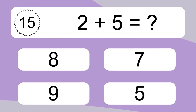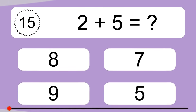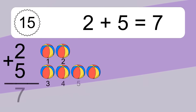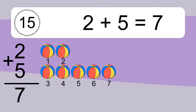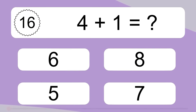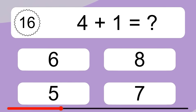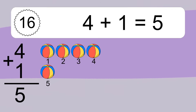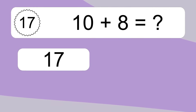2 plus 5 equals what? 2 plus 5 equals 7. Let's count it. 1, 2, 3, 4, 5, 6, 7. 4 plus 1 equals what? 4 plus 1 equals 5. Let's count it. 1, 2, 3, 4, 5.